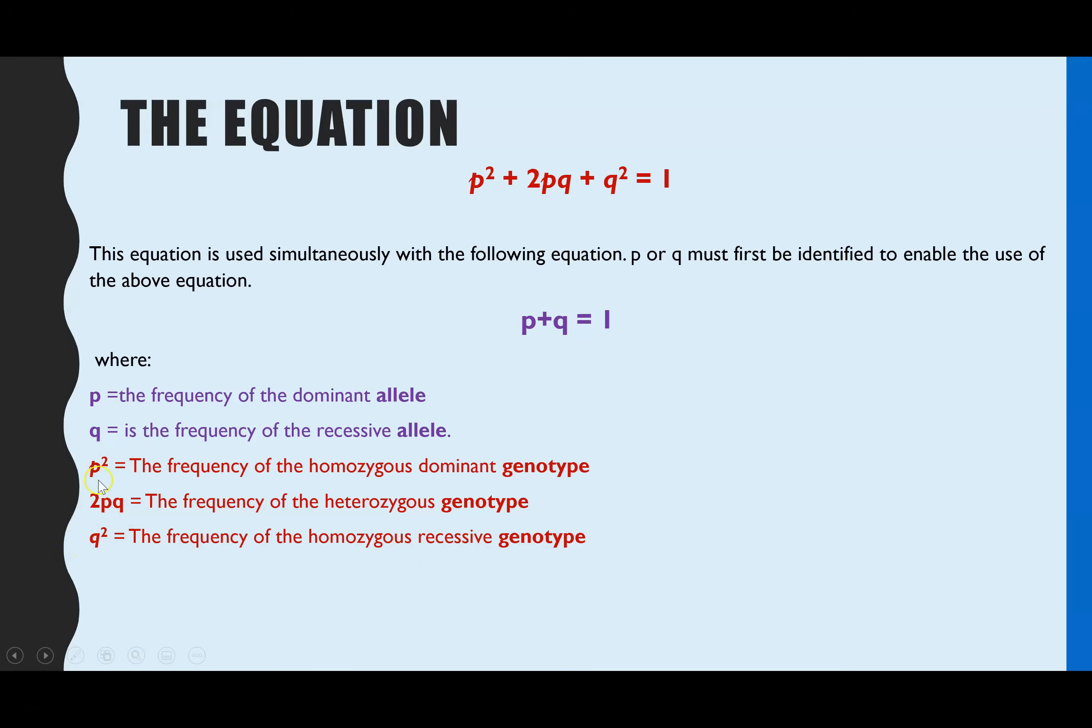You'll always be one of those three genotypes, which is why it equals one in total to represent the whole population. The second equation, P plus Q equals one, is representing the alleles. The alleles that you have available for this gene will either be dominant or recessive, so that's why the total equals one. P is representing the frequency of the dominant allele, and Q is representing the frequency of the recessive allele.